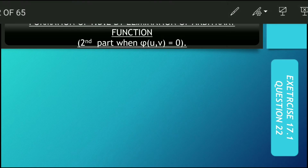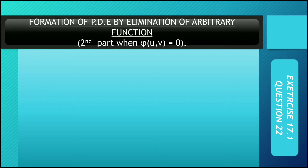Moving to question number 22 — we are looking at the steps related to the formation of a PDE by elimination of an arbitrary function. This is the φ(u, v) = 0 method. Let me outline the steps we need to take.